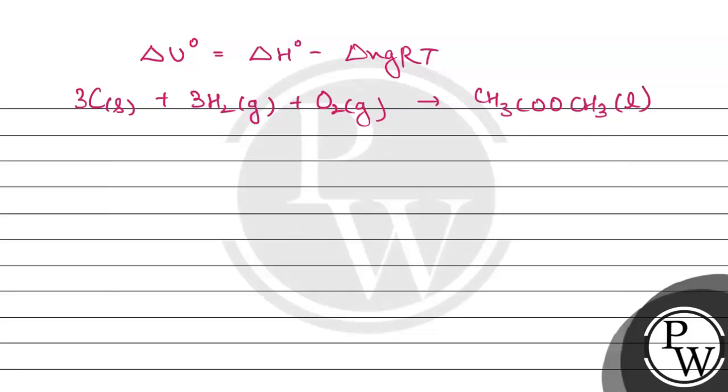For this reaction, we will find the value of delta NgRT as we need it for this formula. Delta Ng always equals the number of moles of gaseous product (Np) minus number of moles of gaseous reactants (Nr). In products, we have liquid, no gaseous product, so it will be zero.